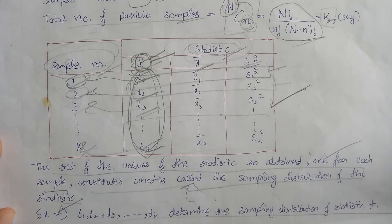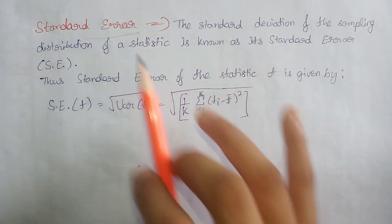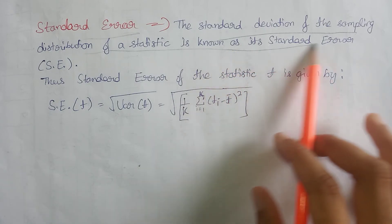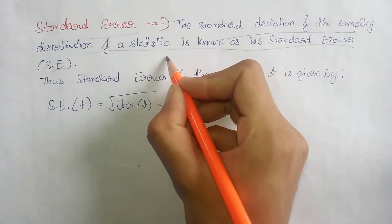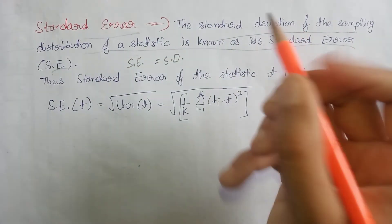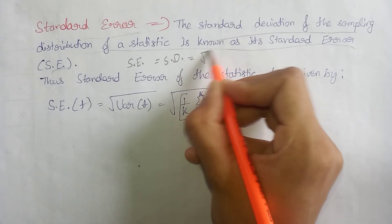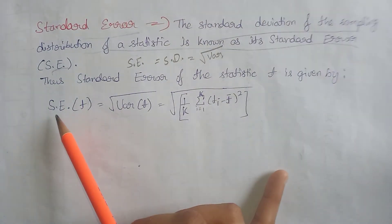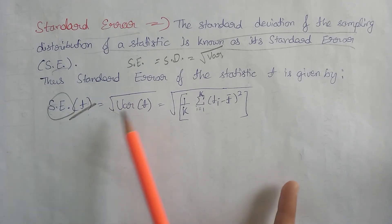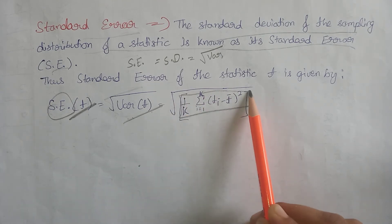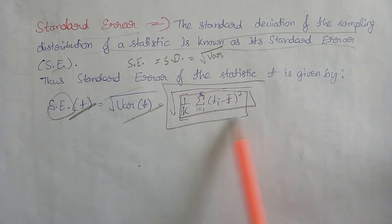The standard deviation of the sampling distribution of a statistic is known as its standard error. Since standard deviation equals the square root of variance, the standard error of the statistic T is equal to the standard deviation, which is the square root of the variance of T. The formula for this variance gives us the standard error of the statistic T.